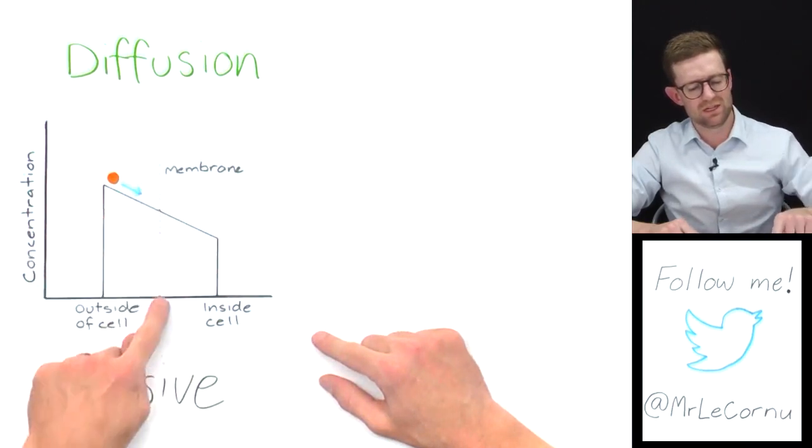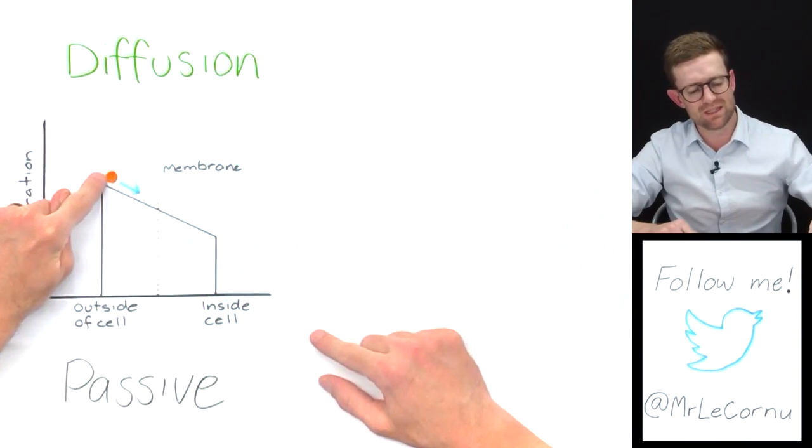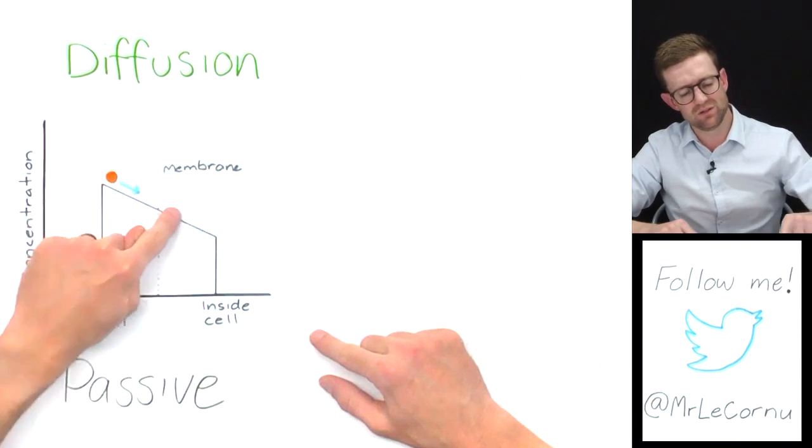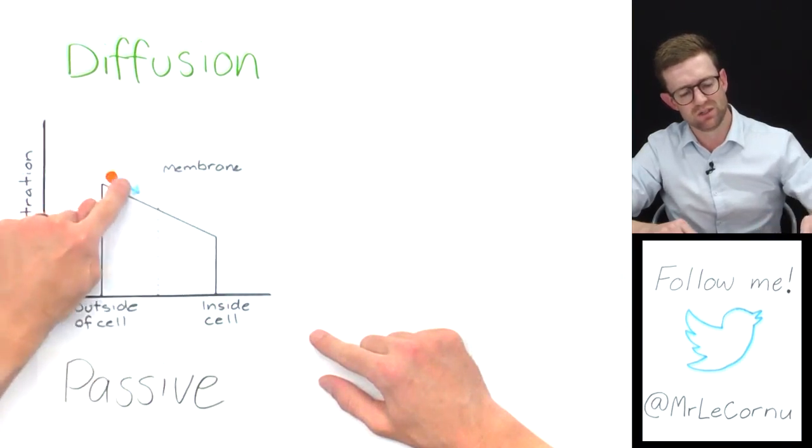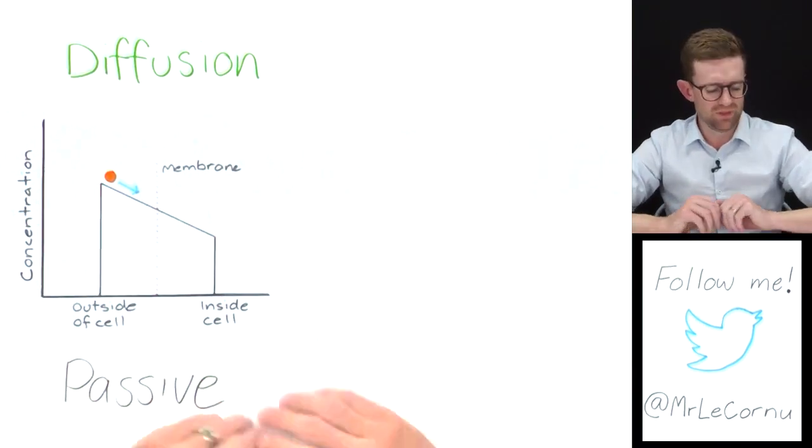In diffusion, this substance will just passively move from higher concentration to low concentration, and there'll be a net movement of that substance inside the cell. That's diffusion.